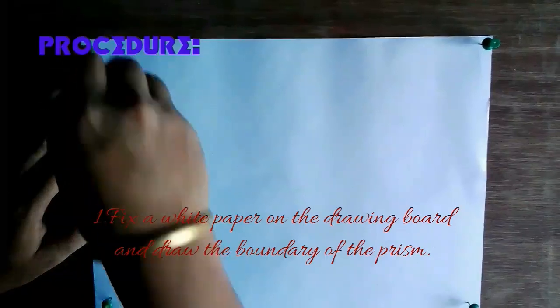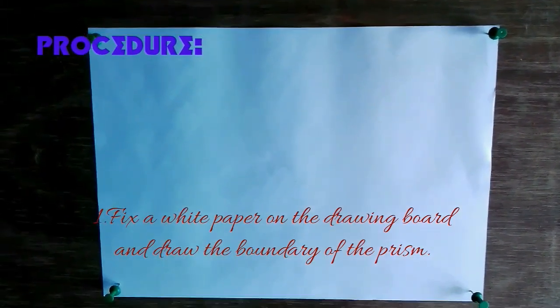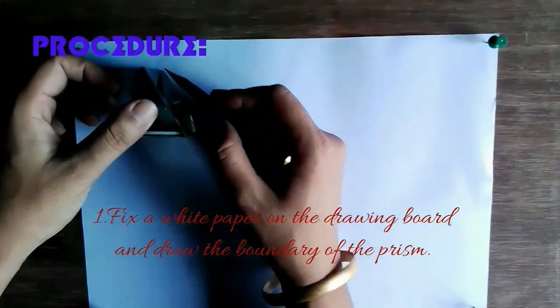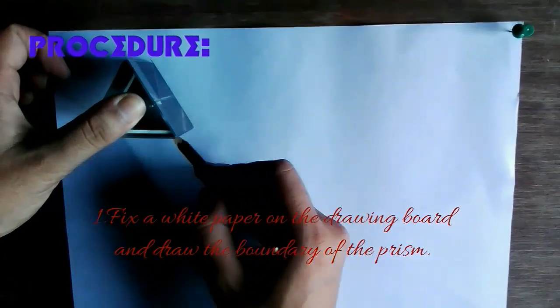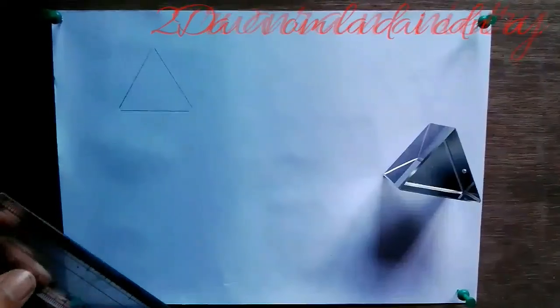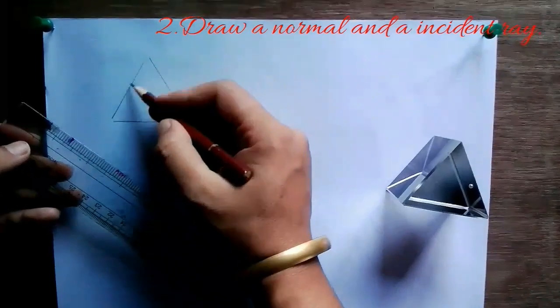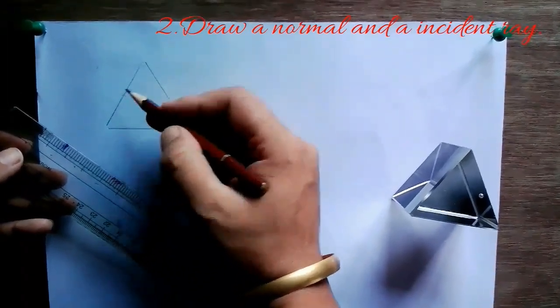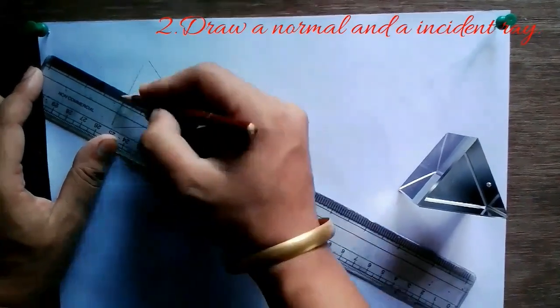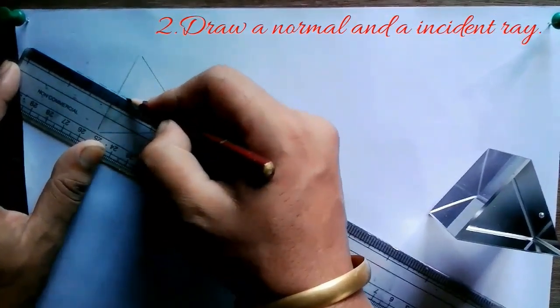Students fix a white sheet of paper on the drawing board with the help of drawing pins, then draw the boundary of the prism. Draw a normal on the first refracting surface at the center, and then draw the incident ray.